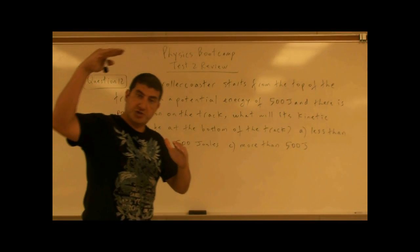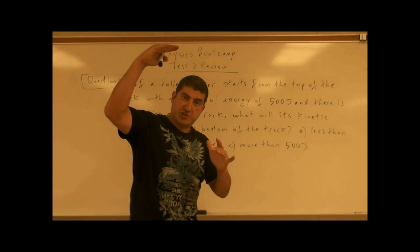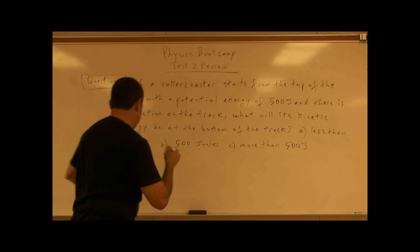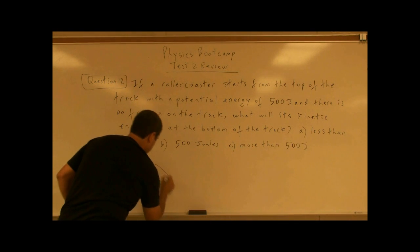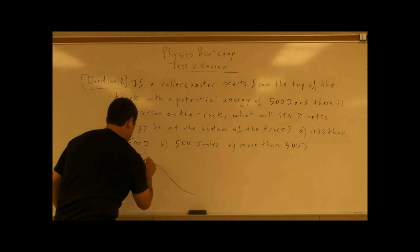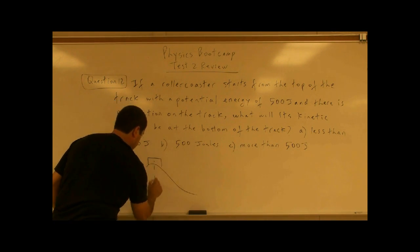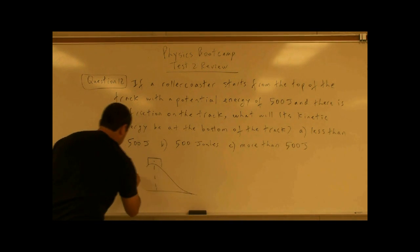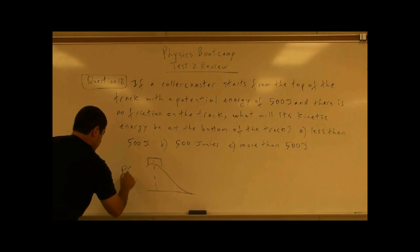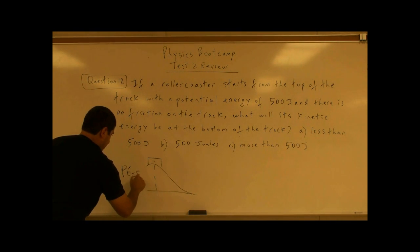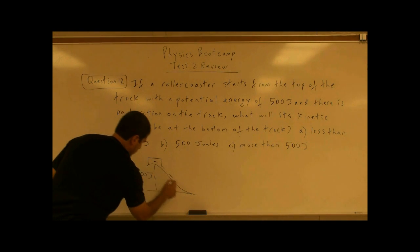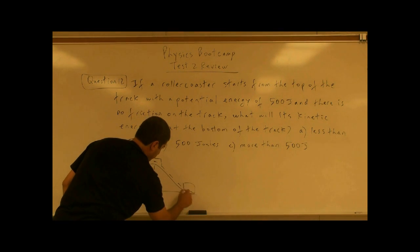So, you start at the top with certain potential energy, then you go down. The roller coaster is here — it has a potential energy of 500 joules. What would its kinetic energy be at the bottom?